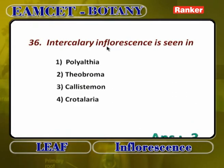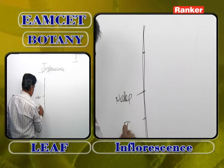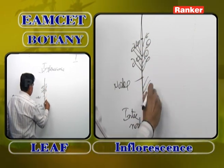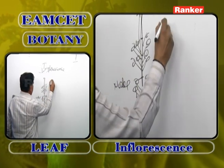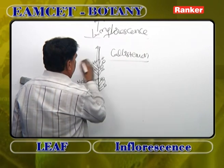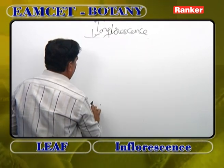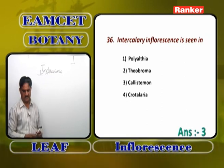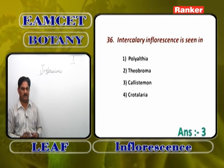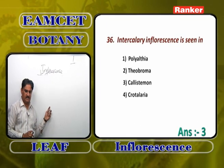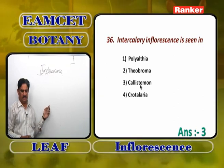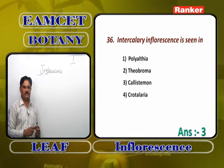Intercalary inflorescence: the peduncle shows nodes and internodes, and the inflorescence develops on the internodes. Normally after inflorescence formation the stem growth stops, but here the growth of the stem continues — found in callistemon. Polyalthea and theobroma show cauliflory — formation of flowers on an old stem. Crotalaria shows terminal simple raceme inflorescence. So intercalary inflorescence is a key feature of callistemon.